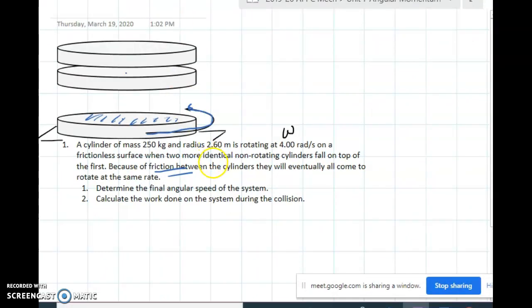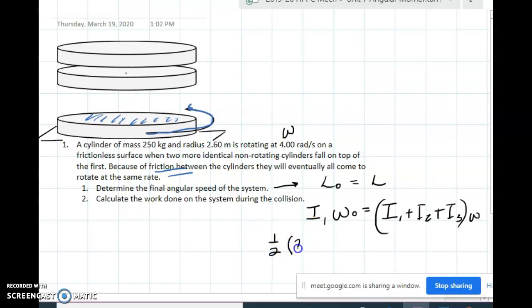Alright, so then determine the final angular speed of the system. We have conservation of angular momentum because there's only enough friction between them to cause them to stick together. So initially you have I of the first one, omega initial, and that's going to equal the whole set of them, I1 and I2 and I3, they're all going to be moving together. So then this is the disk, so it would be one half of the 250 times its radius 2.6 squared times the 4.